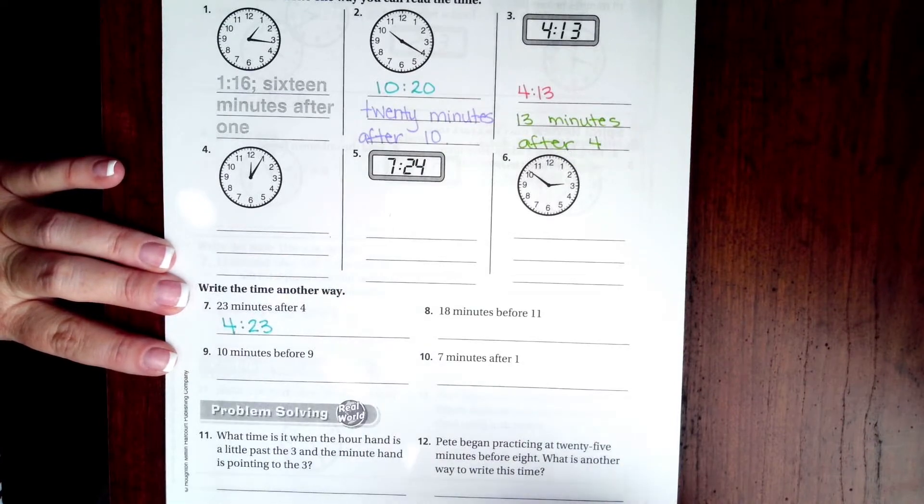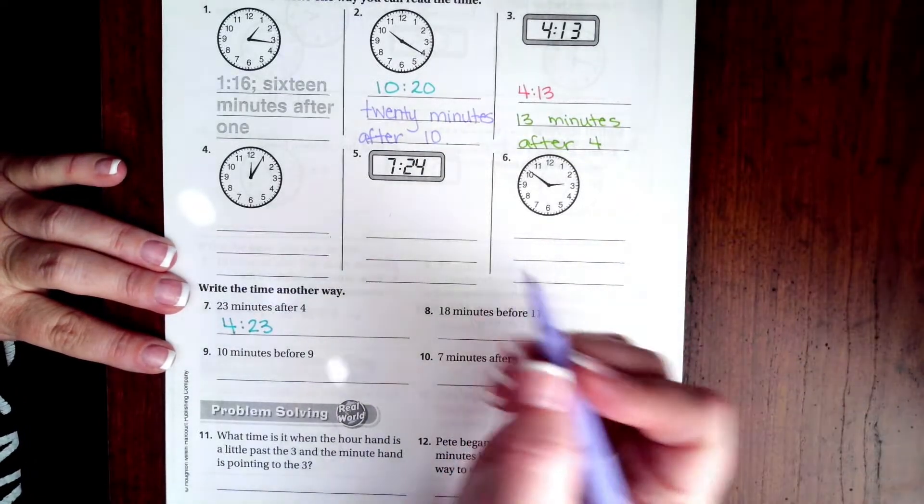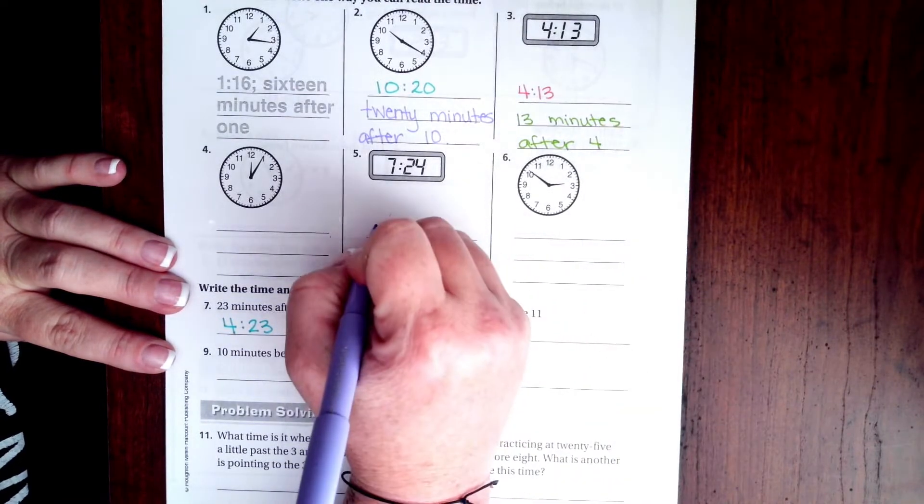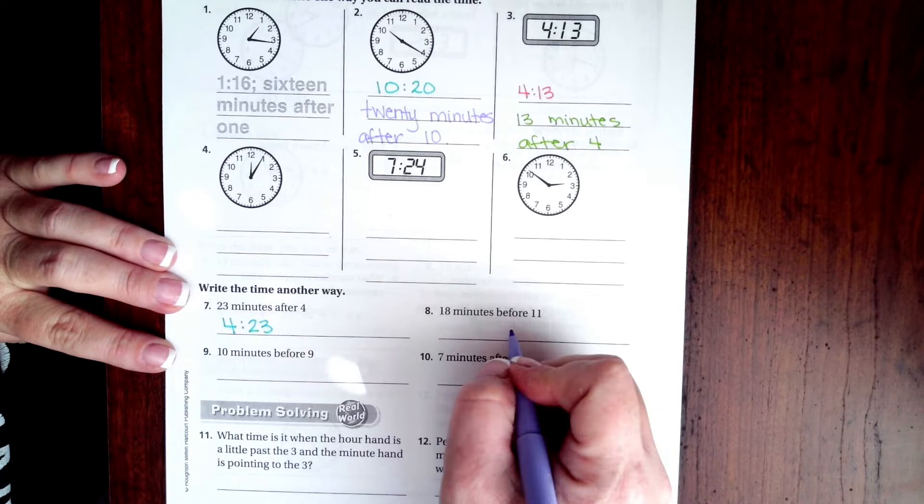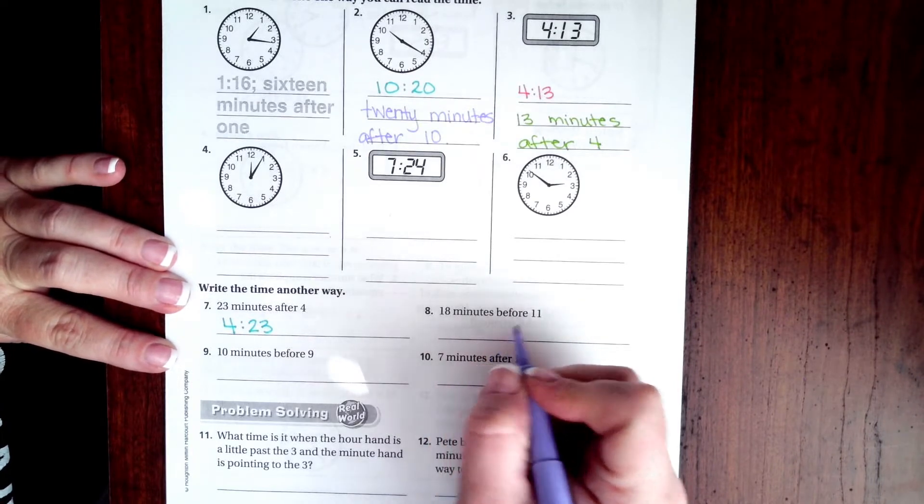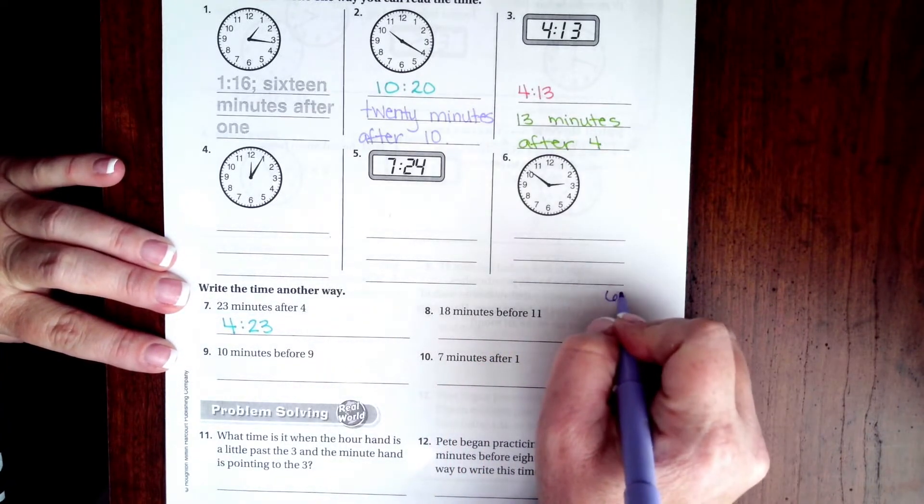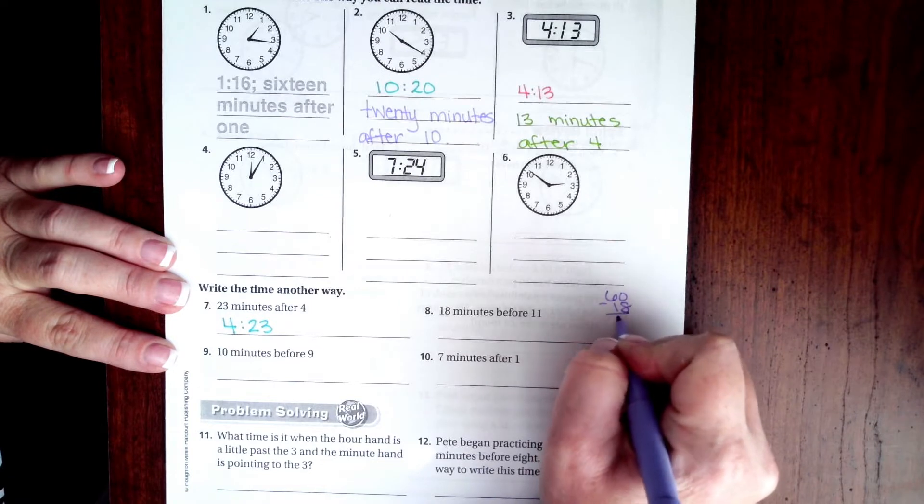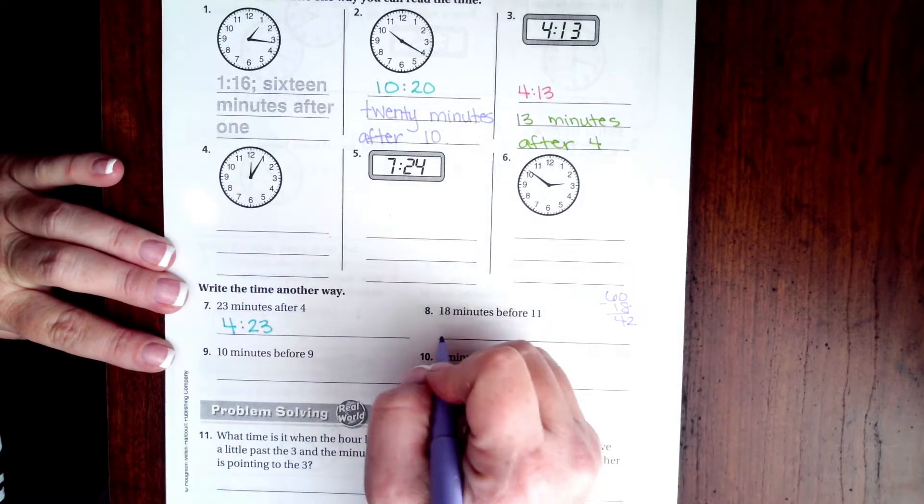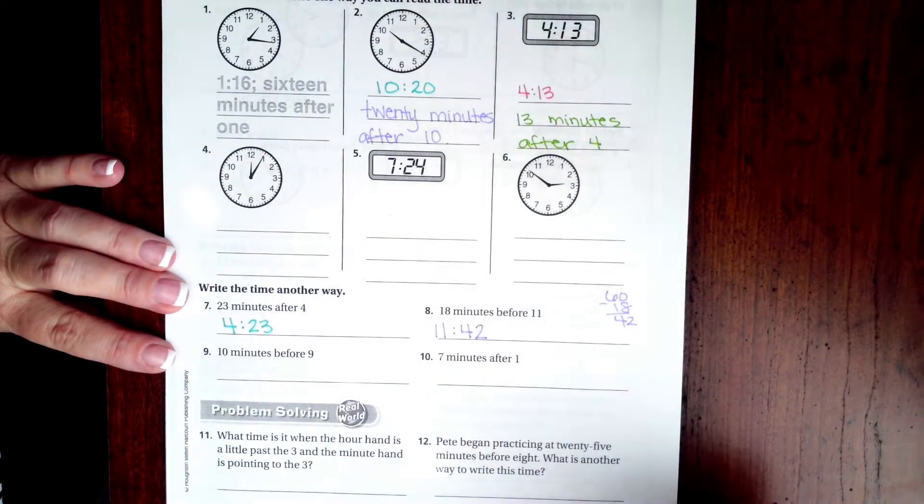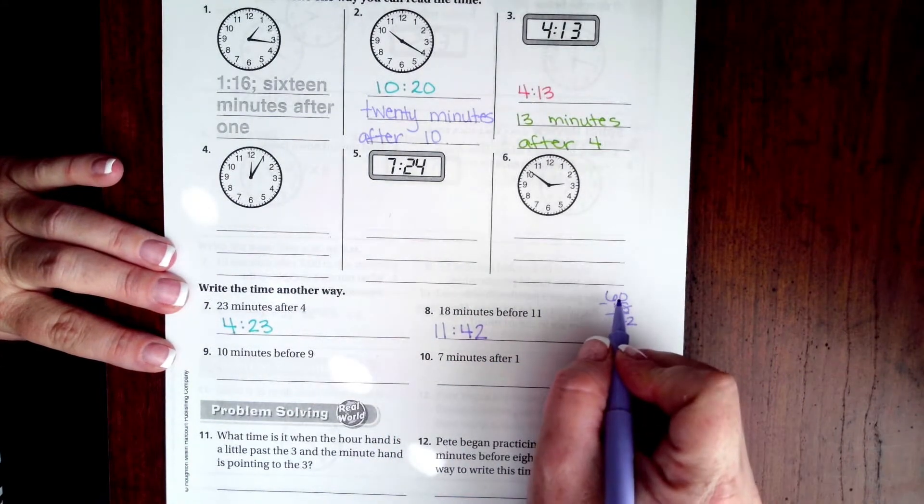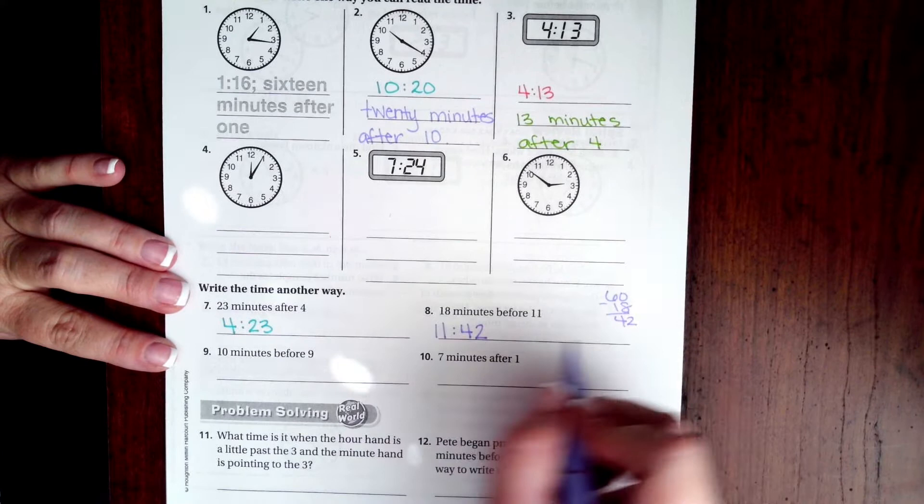One more. 18 minutes before 11. So before 11, we need to take our 60 and we're going to subtract 18, which leaves us with 42, so it would be 11:42. We're going to take it away from 60 because there's 60 minutes in an hour. We're taking away those 18 minutes and we're left with 42.